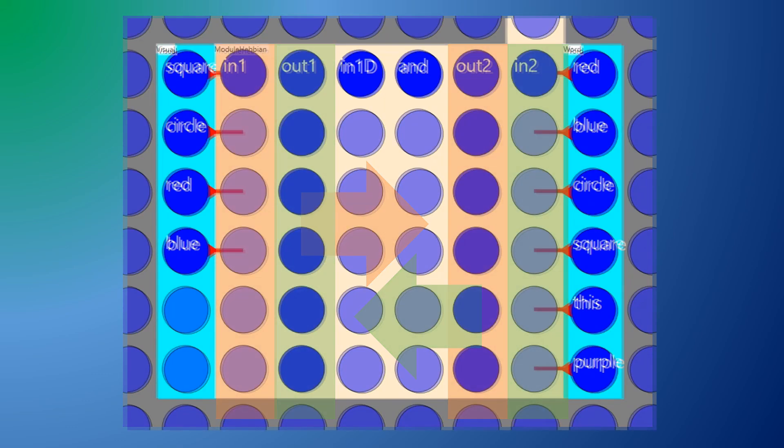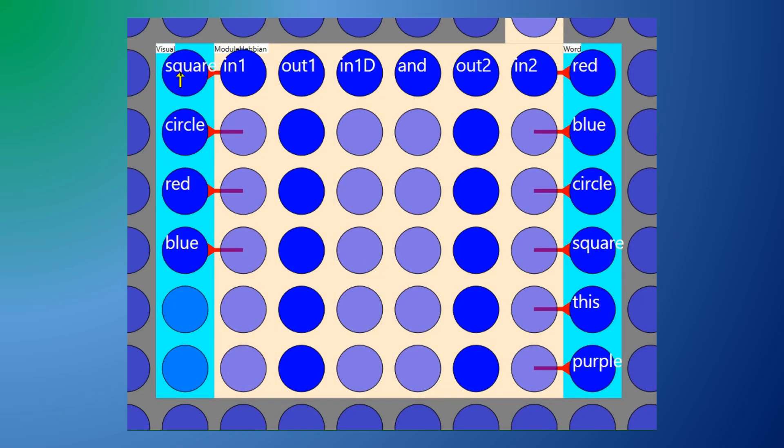Initially the module is not connected internally so firing any of the input neurons individually has no effect. But let's fire some neurons at nearly the same time.